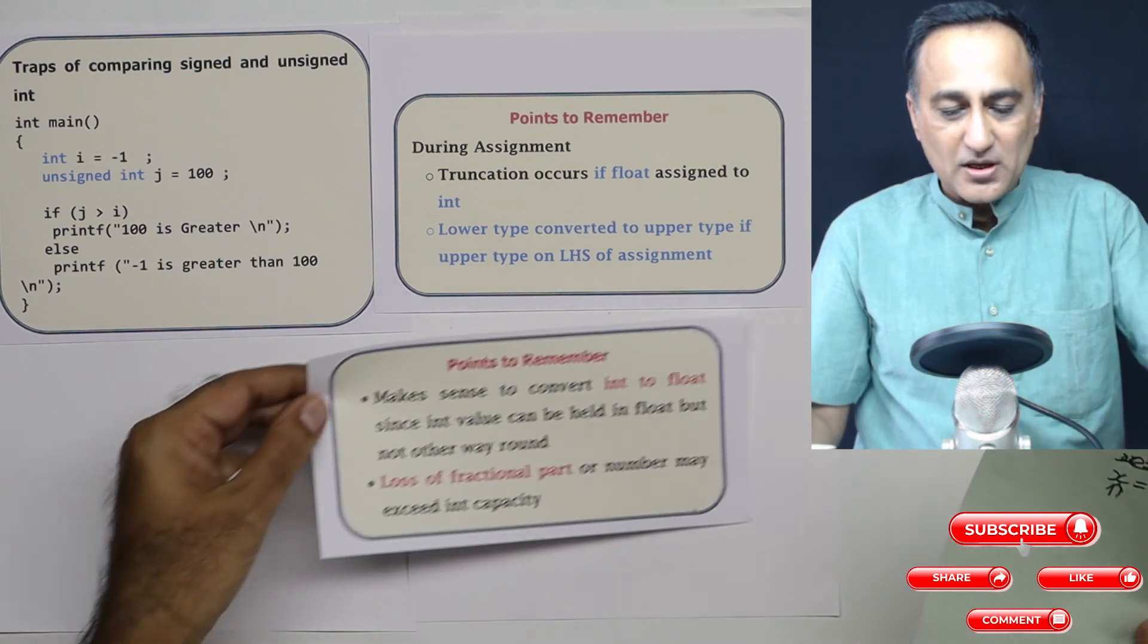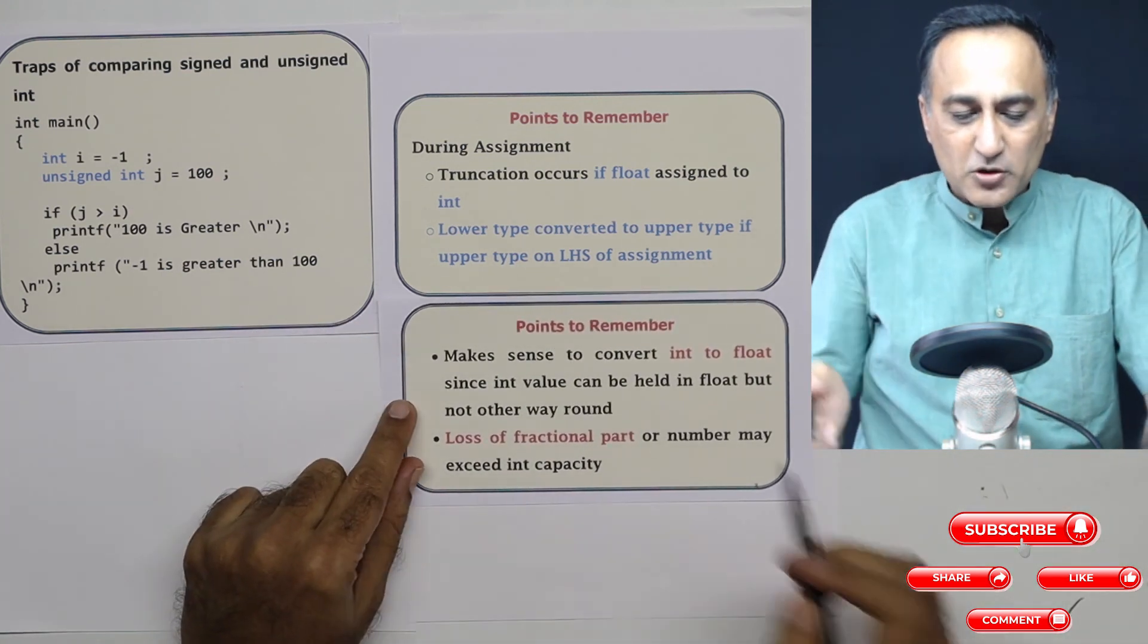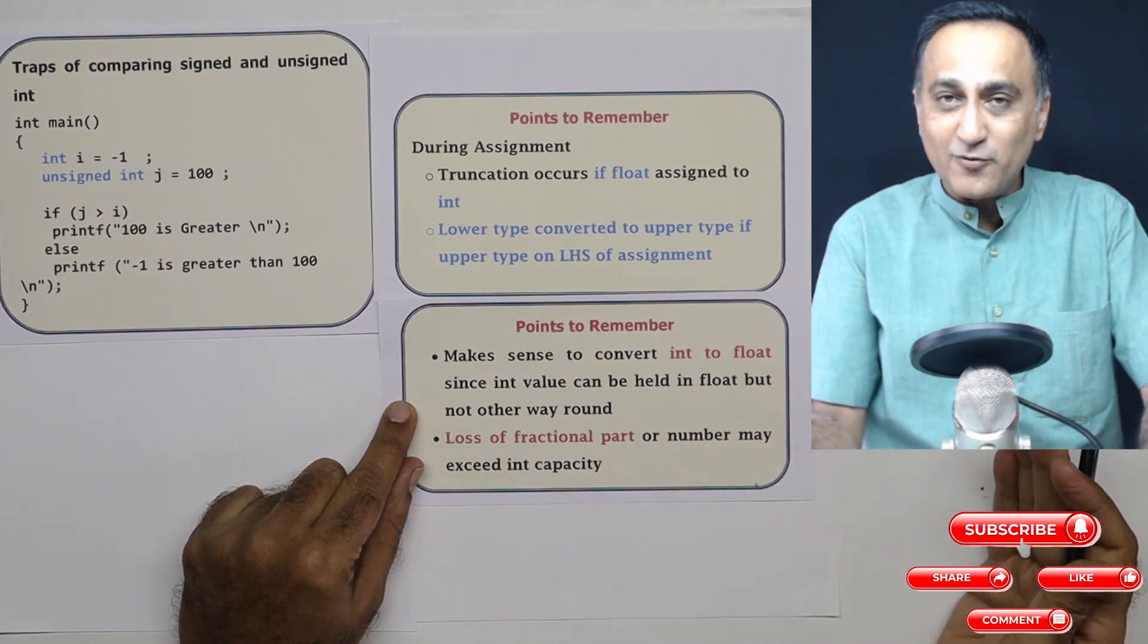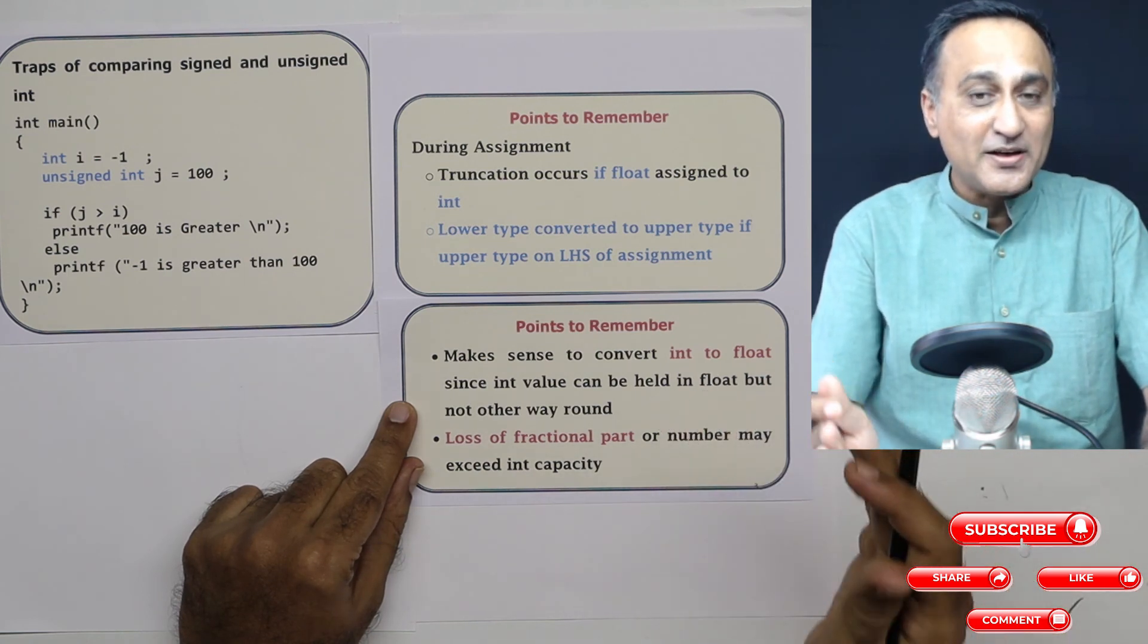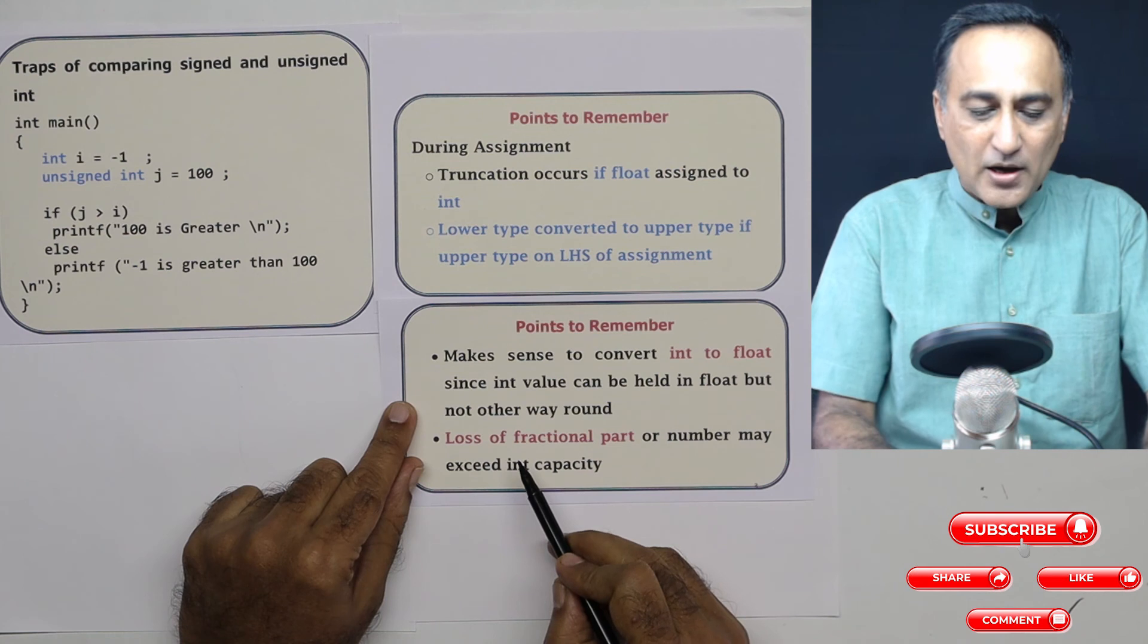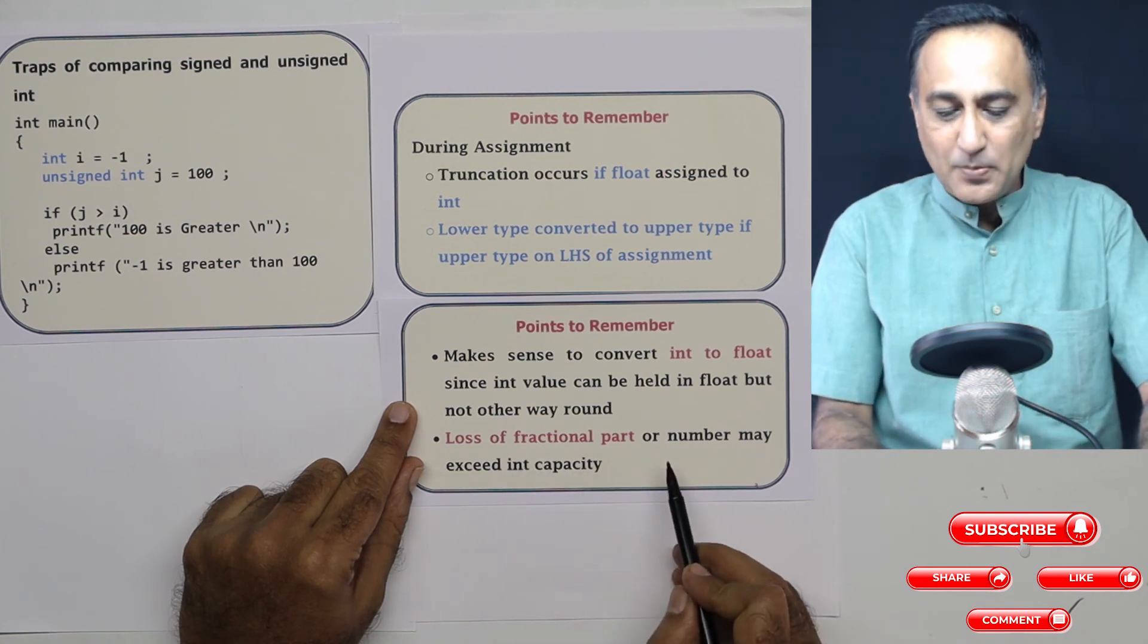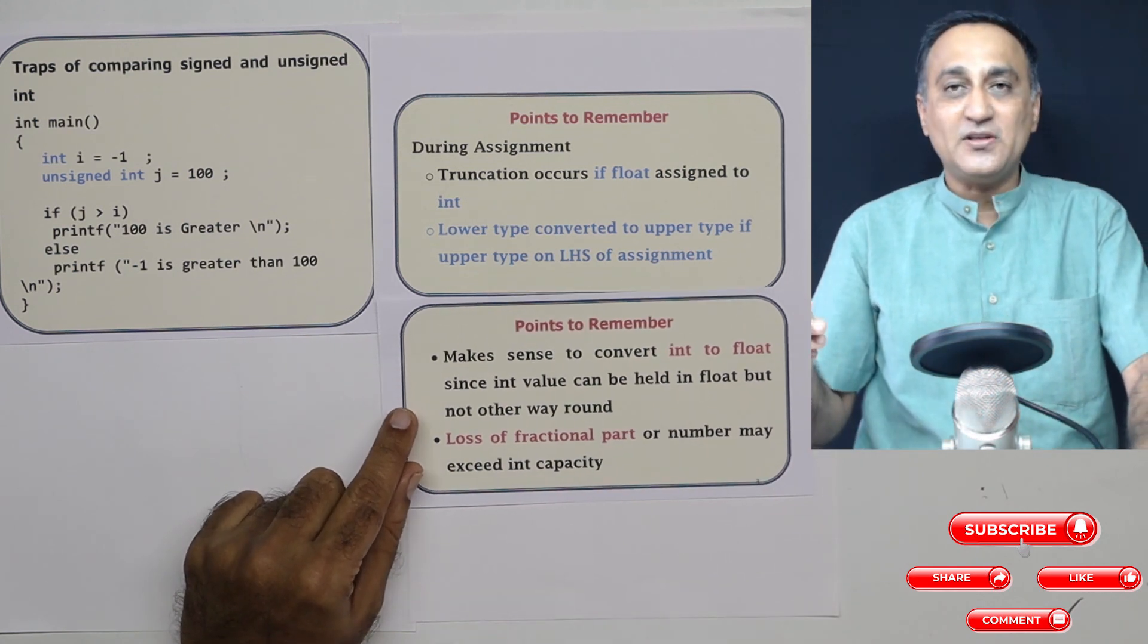So the moral of the story here is certain points you got to remember. It makes more sense to convert integers to float since integer value can be held in floating point numbers but not the other way around - float may not always fit in an int. Now another problem if you try to assign a float to int is you may lose the fractional part of the number or the number may exceed the capacity of the integer.